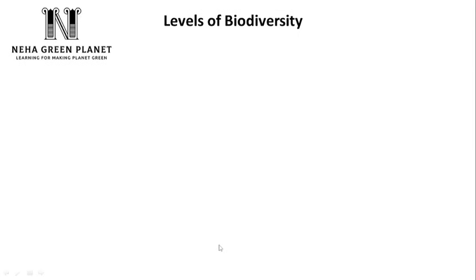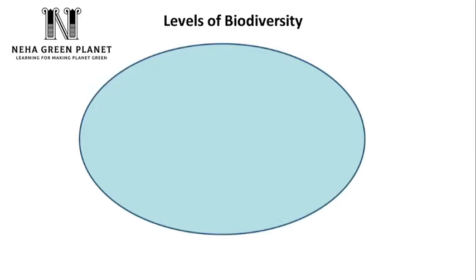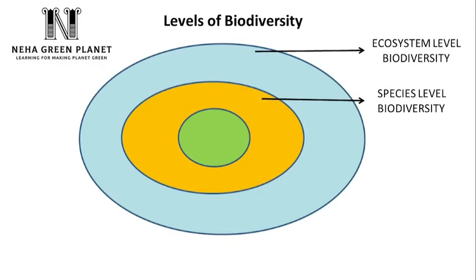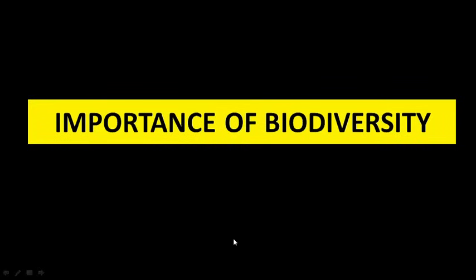To summarize, biodiversity exists at three levels. At the broadest level we have ecosystem-level biodiversity; within ecosystems we find species-level biodiversity where different species are present; and within a species, for example within humans, we find a lot of variation due to new types of genetic combinations — that is genetic-level biodiversity. Biodiversity is very, very important — let's see its importance in detail.